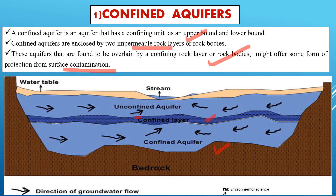Confined aquifers are generally less susceptible to surface pollution compared to unconfined aquifers. Although the confining layers offer protection, they also limit the recharge of the confined aquifer. Recharge occurs primarily in areas where the confining layer is absent or thin, allowing water to percolate down into the aquifer.